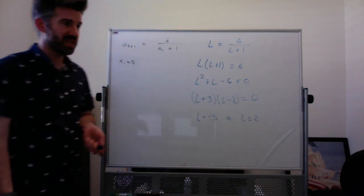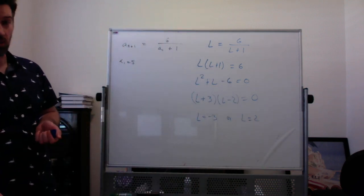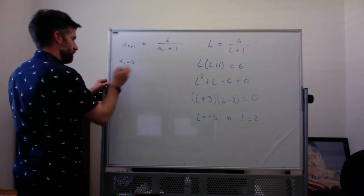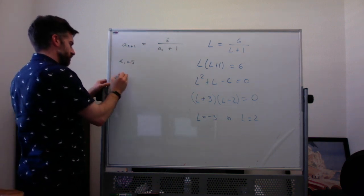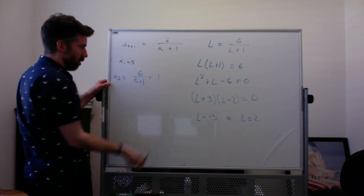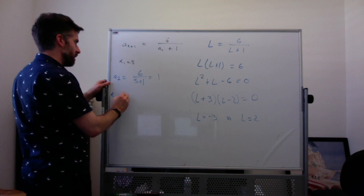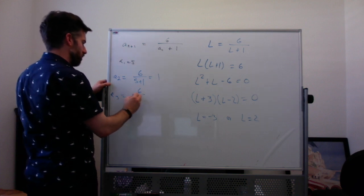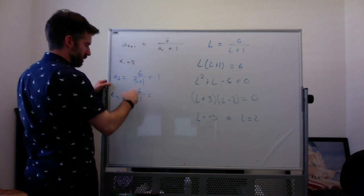So which of these is the limit? Well, it depends on where we start. Here we're starting at 5. So A sub 1 is 5. A sub 2 is 6 over 5 plus 1, which is 6 over 6, which is 1. A sub 3 is 6 over 1 plus 1, which is 6 over 2, which is 3.